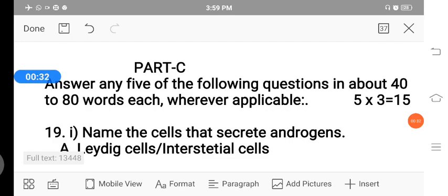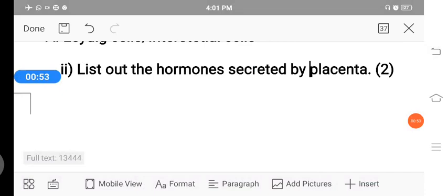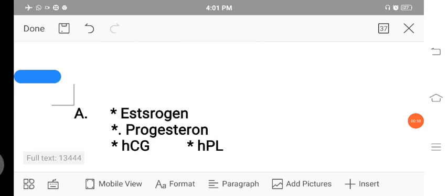The 19th question is split into two. One is name the cells that secrete androgens. The answer is Leydig cells or interstitial cells. The second question is list out the hormones secreted by placenta. The placenta secretes majorly four hormones.